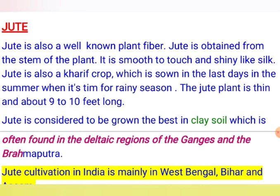Jute is considered to grow best in clay soil, often found near the deltaic regions of the Ganga and Brahmaputra rivers. The deltaic area is that land formed by the soil particles deposited by rivers as the water flow pressure reduces.